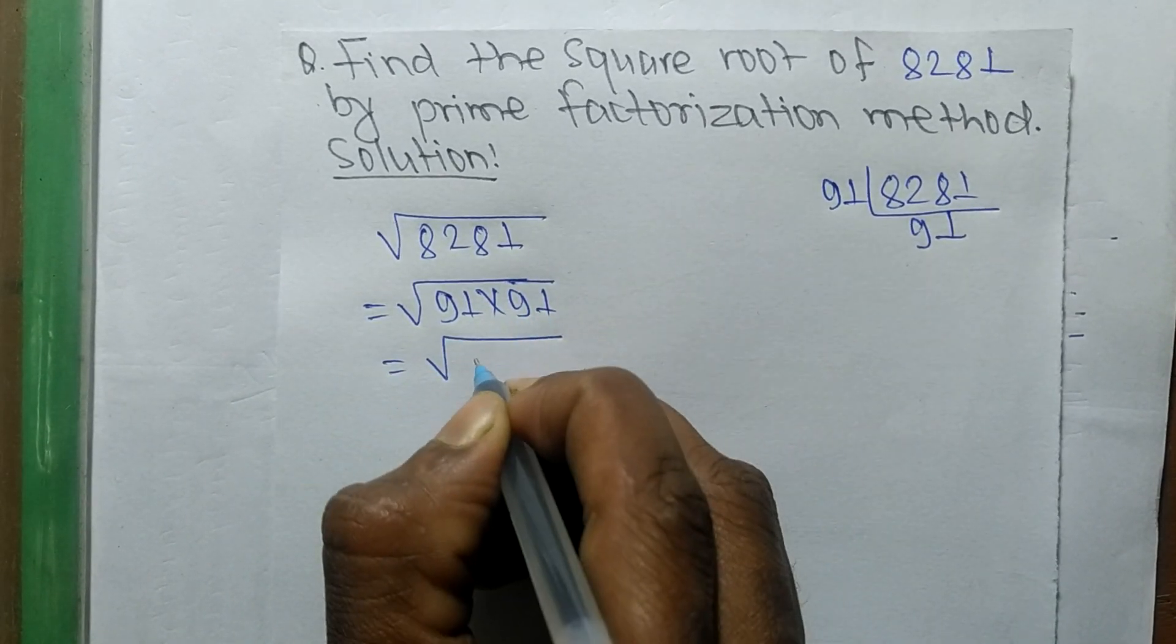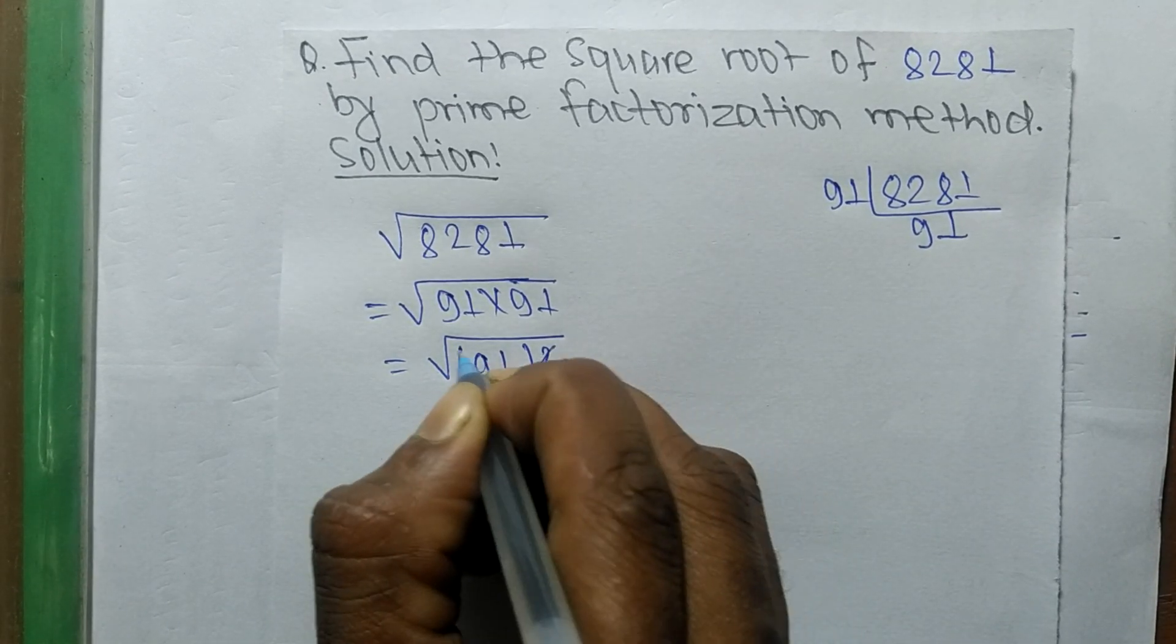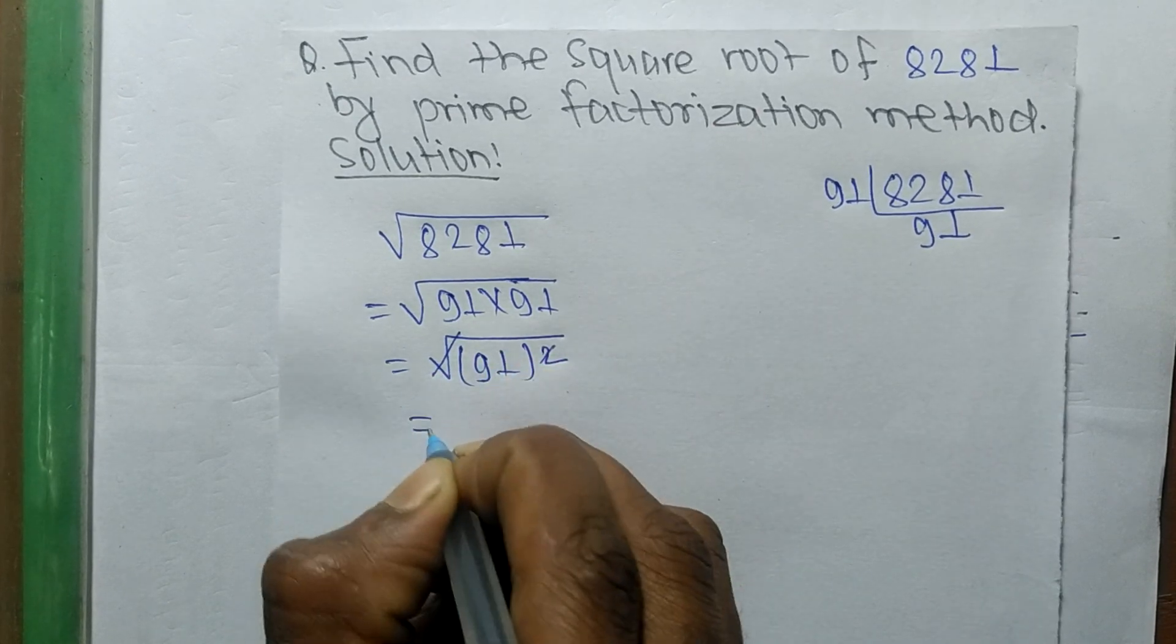91 times 91 means it is 91 squared. So a square and a square root cancel each other.